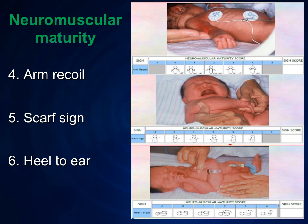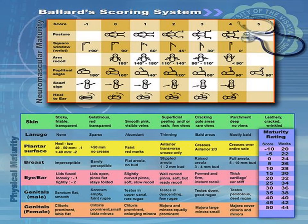Both physical and neuromuscular examinations are very important in the Ballard score. Looking at the Ballard score table, the score is 0 at 24 weeks of gestation. As gestational age increases by 2 weeks, the score increases by 5 points. So it is 20 at 32 weeks, 40 at 40 weeks, and 50 at 44 weeks, which is the maximum.